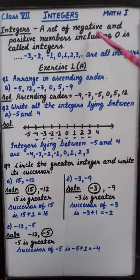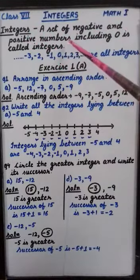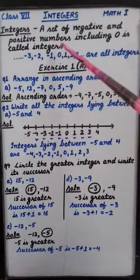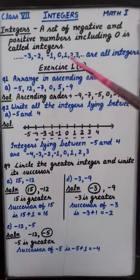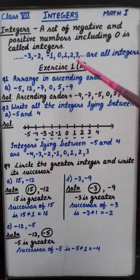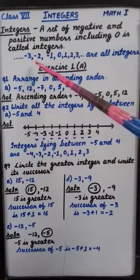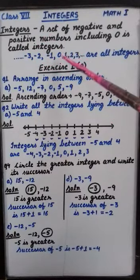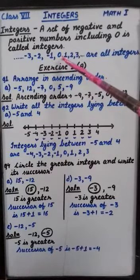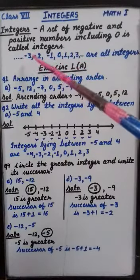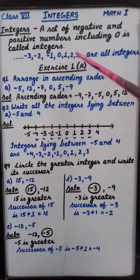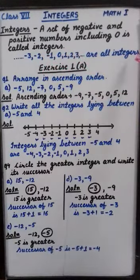A set of negative and positive numbers including 0 is called integers. So when we are talking about integers, positive numbers are there, negative numbers are there and 0 is also included. But 0 is neither positive nor negative. So here minus 3, minus 2, minus 1, 0, 1, 2, 3. These all are integers.